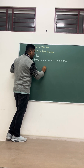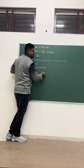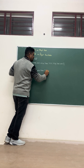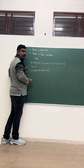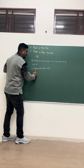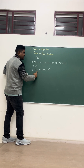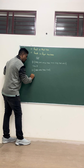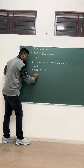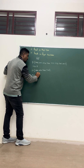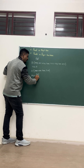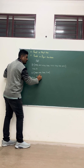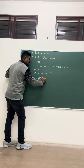So Event E includes: H, H, H; H, H, T; T, H, H; T, H, T. How many elements do we have? 4. So probability of E equals n(E) divided by n(S) — that is, 4 by 8.